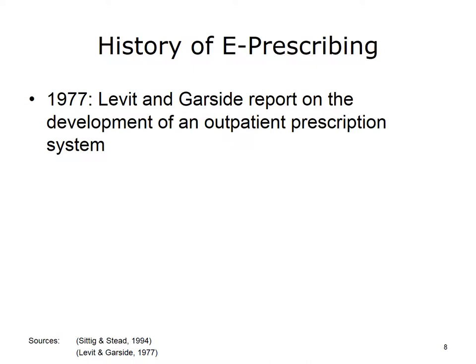Researchers Dean Sittig and William Stead published a key article that summarizes the history of e-prescribing before the mid-90s. They report that 1977 was the advent of the first e-prescribing system, described in an article by Levitt and Garside. The first such system was relatively basic compared to today's standards, developed to capture prescriptions entered in coded form. For example, a physician could enter the first two letters of a common drug name, followed by T for tablets, S for solution, or C for cream. Next, the dose was entered as a number. A basic prescription order could be entered very rapidly with only a few keystrokes. This approach was a time-saver for expert users, but most novice users found the system confusing or hard to learn.